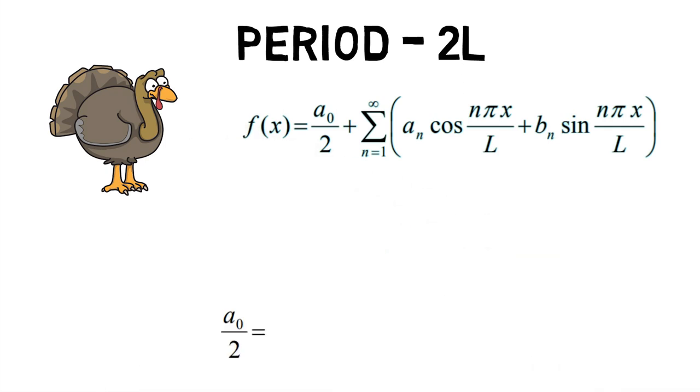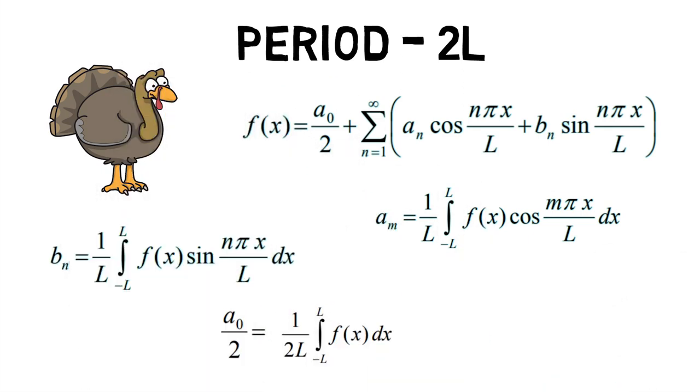Where the coefficient a0 upon 2 is given by 1 upon 2L into integral of f of x dx from minus L to L. Fourier cosine coefficient an is given by 1 upon L into integral of f of x into cos of n π x upon L dx from minus L to L. And finally, Fourier sine coefficient bn is given by 1 upon L into integral of f of x into sin of n π x upon L dx from minus L to L.